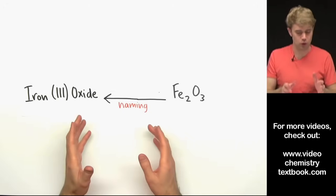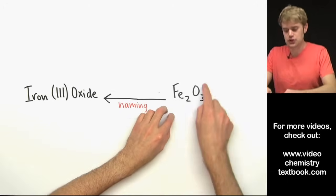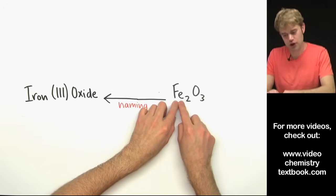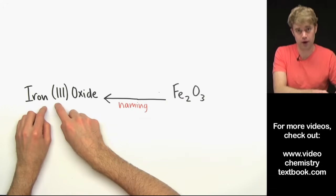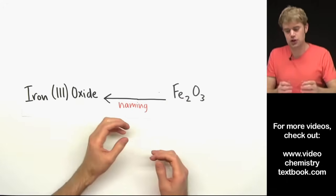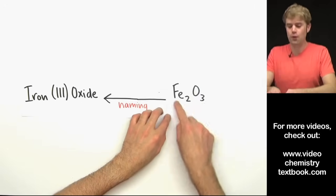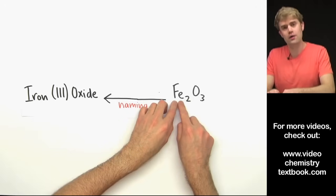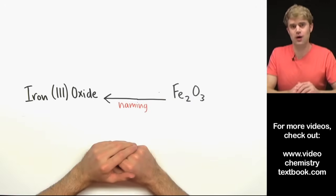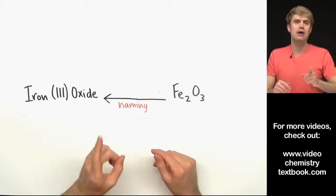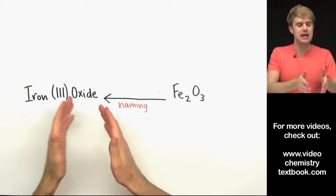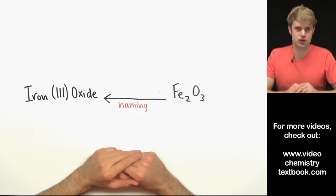In the next video, we'll learn how to go in the other direction. How to start with a formula that contains a transition metal and then write a name for it. This is a little bit more challenging because transition metals don't always have the same charge. So we have to do some math and figure out what the charge of the ion is. And then we use that to write the name. So check out that video called Naming Compounds with Transition Metals.